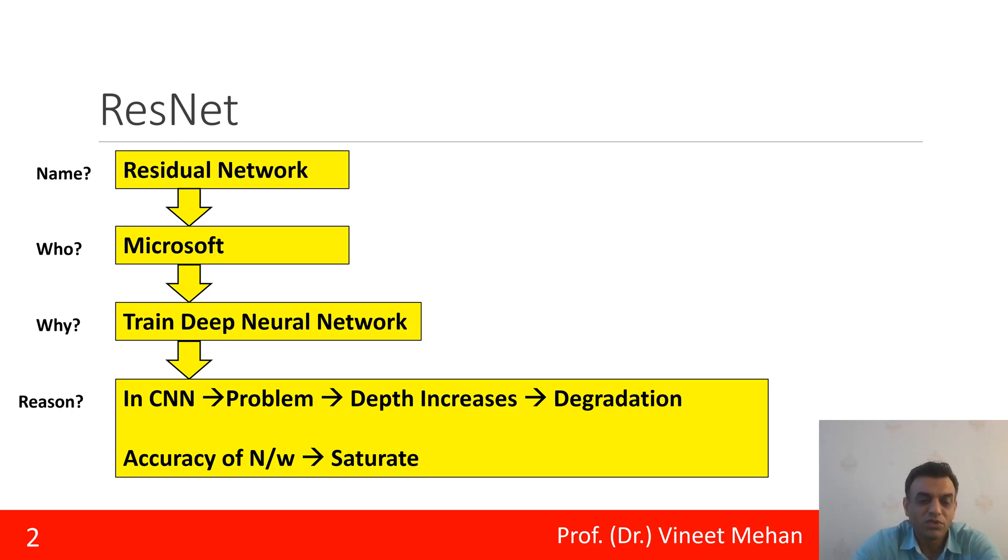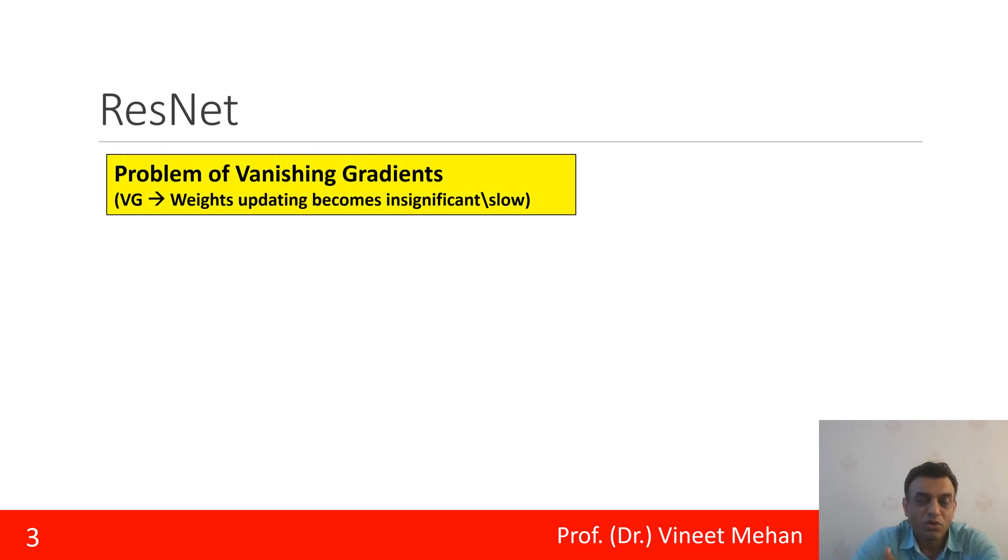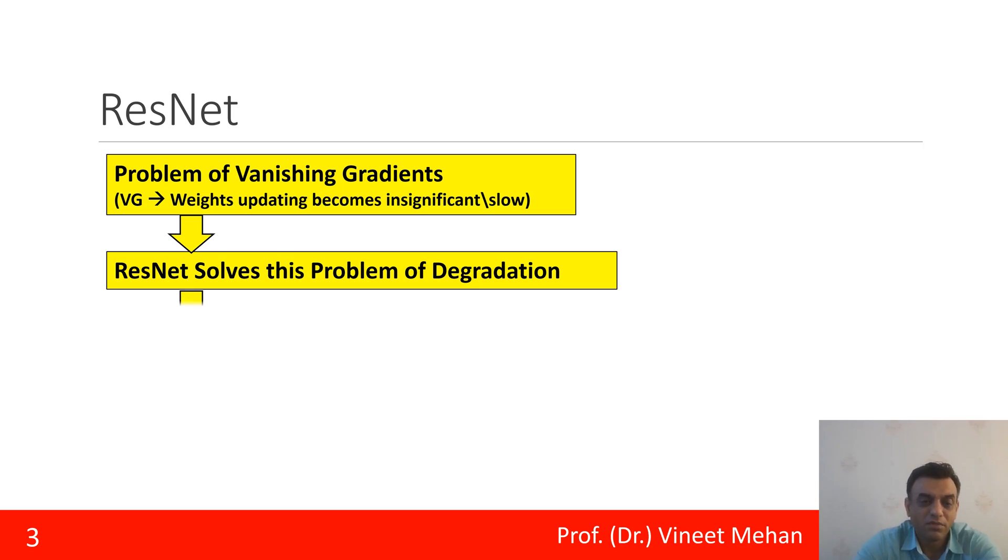Degradation means the accuracy of the network became saturated. The more layers we add, the accuracy still remains the same. So there's a problem of vanishing gradients, and this particular problem is solved by ResNet. How is this problem solved? Because they introduced learning that is called residual learning.